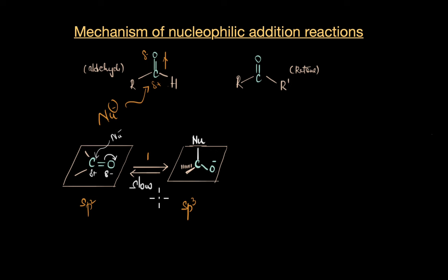All of this makes the first step substantially slower than the rest of the steps. Now the next step produces a neutral molecule. As you can see here, the alkoxide ion abstracts a proton from the medium and results in the formation of a neutral molecule.